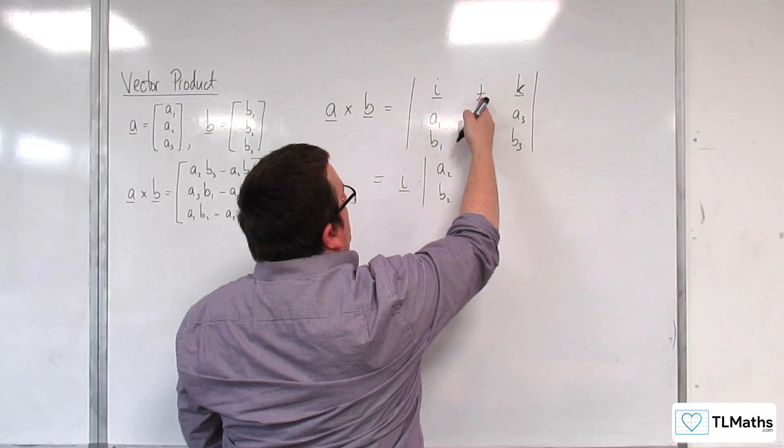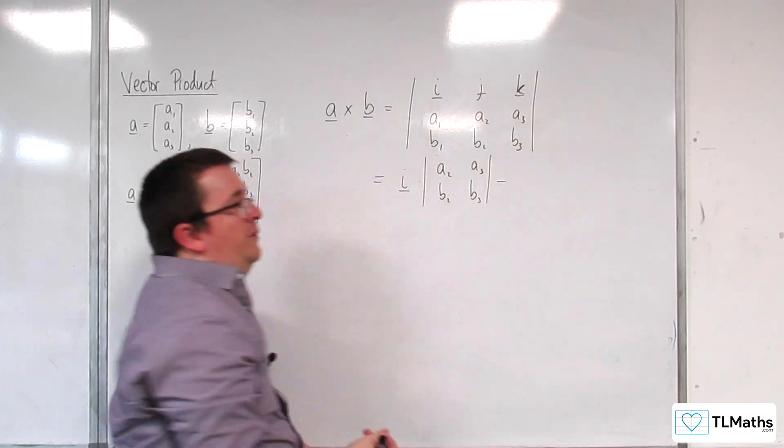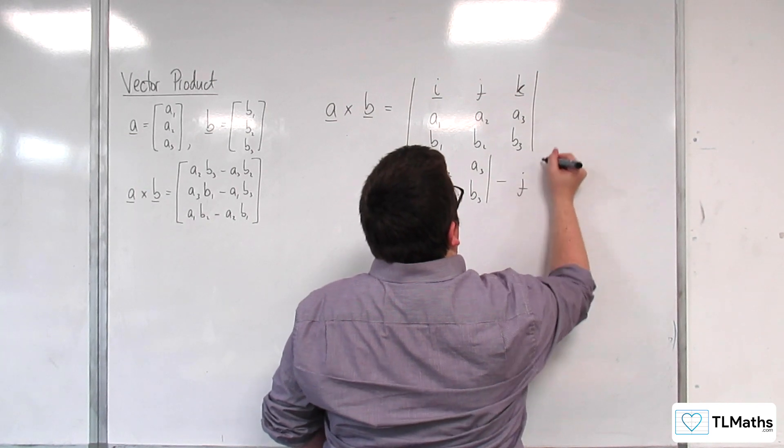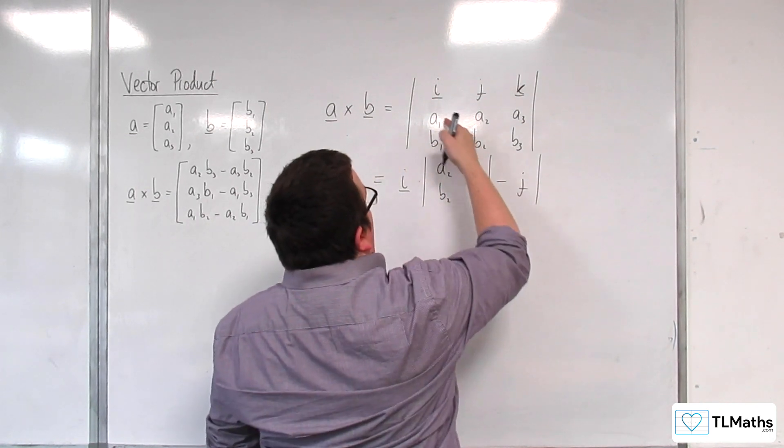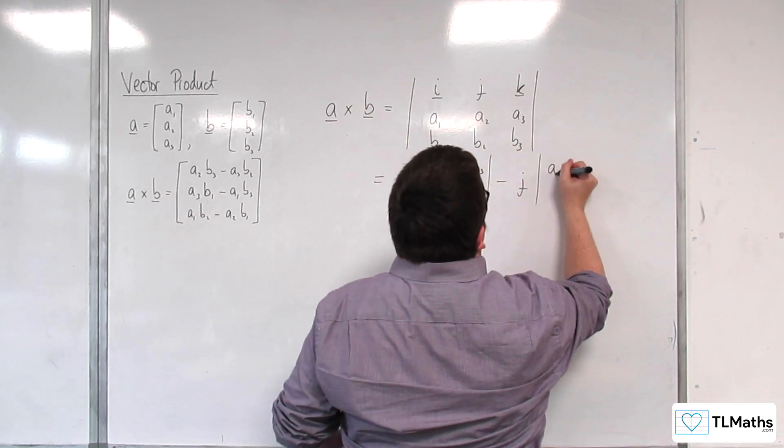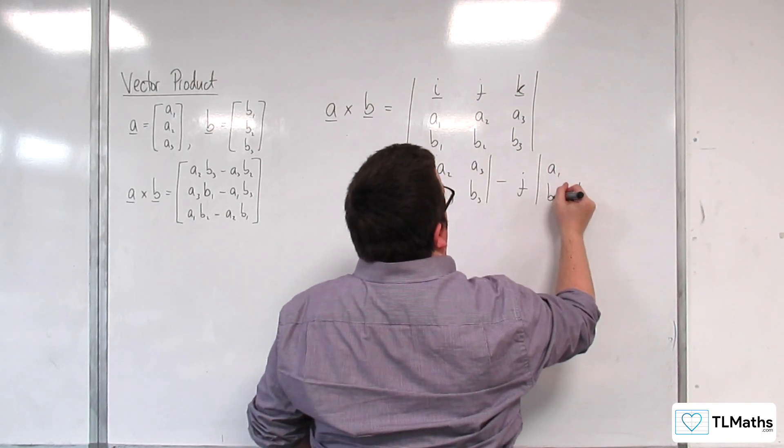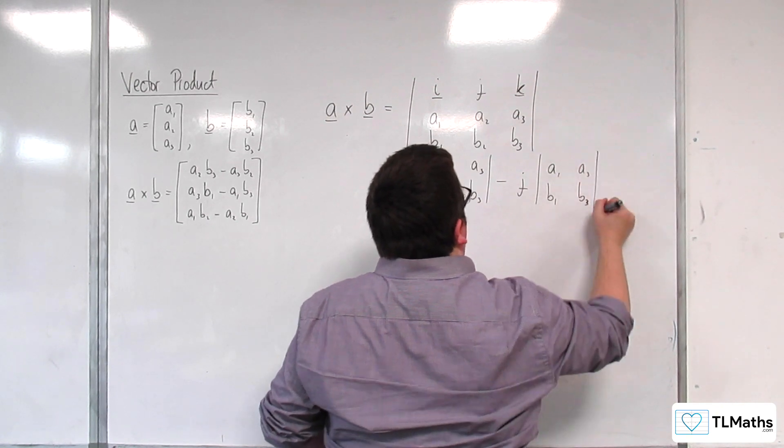Then, when you're working with this middle element, remember that you've got to do subtract. So, J, and we've got A1 times B3, so A1, B3, and then B1, A3, like that.